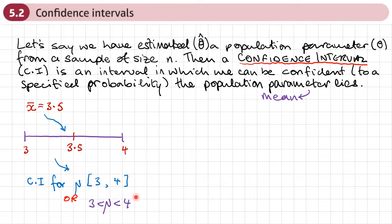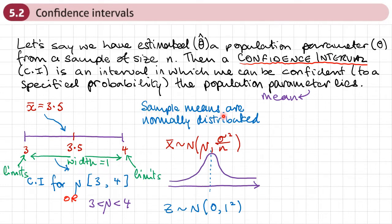You could also write it using inequalities. We talk about this as the confidence interval, and we also talk about the interval width — in this case it would be 1. The values 3 and 4 are referred to as the confidence limits. Since sample means are normally distributed with a mean of the population mean and variance of sigma squared over n, we're going to use the standardized normal distribution to help us find a calculation to work out these confidence intervals.